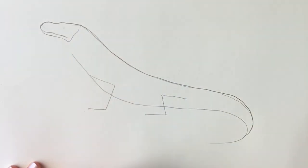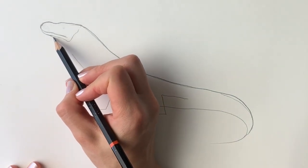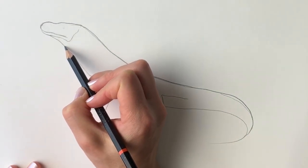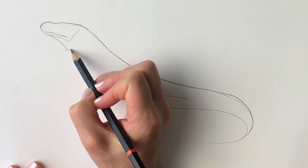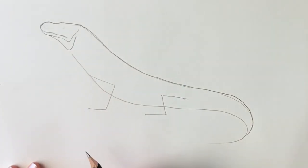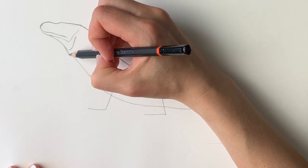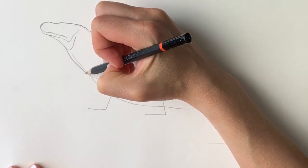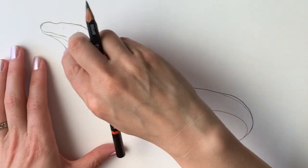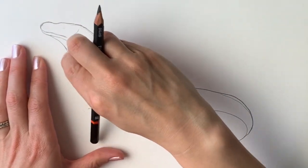So just keep on drawing all these folds of skin that the Komodo dragon has. It's got lots of folds of skin, particularly around the neck area. So keep going, do each of these folds and just rub out the guidelines as you go along.